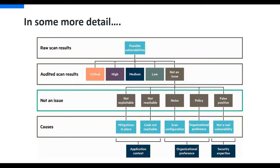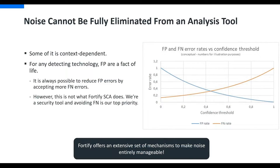Looking in more detail, everything listed as 'not an issue' can be broken down further into categories. We have false positives, where a security expert would identify something reported by Fortify as being incorrectly identified as an issue. But it could also be things on the organizational preference side, or software quality issues - things typically reported as low risk that you might choose to ignore. Noise can also be based on application context that makes particular issues either not exploitable or unreachable. Unfortunately Fortify is unable to know these things from a scan alone, so additional steps need to be taken.